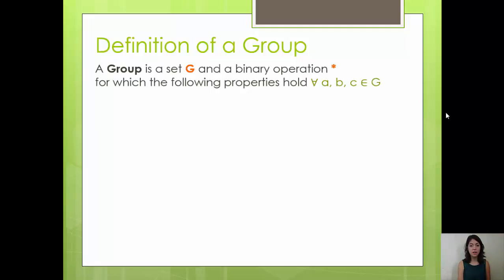So first, let's get started with the definition of a group. A group is a set denoted by the letter G and a binary operation denoted by star, for which the following properties hold for every A, B, and C elements of G.